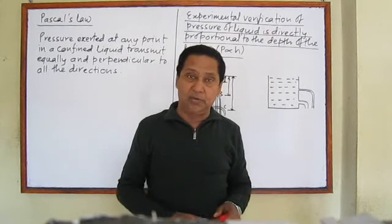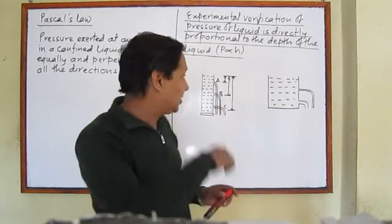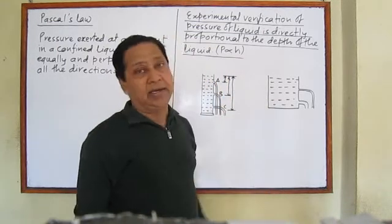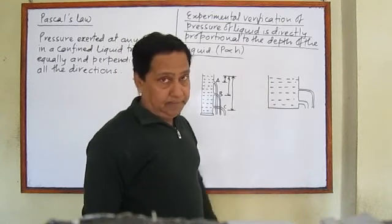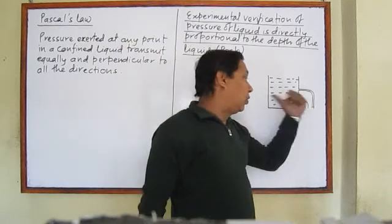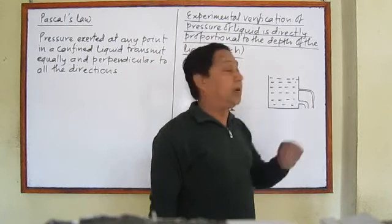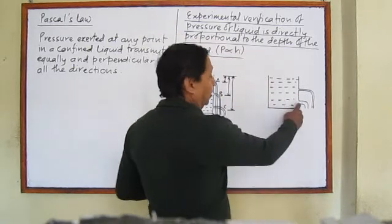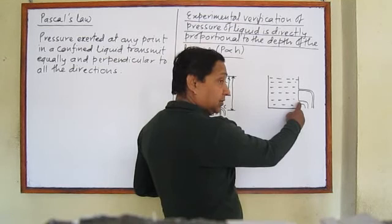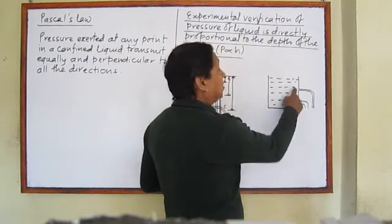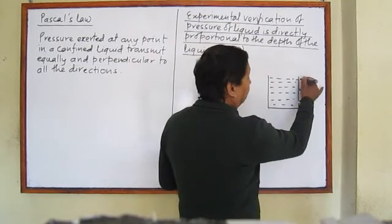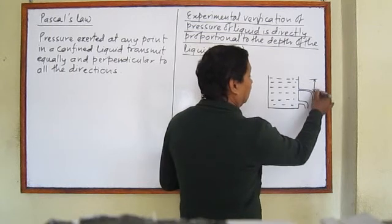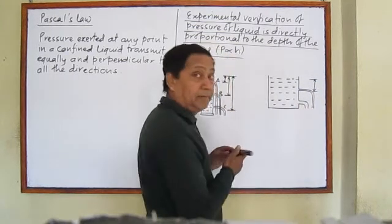But I want to tell you one interesting matter. Look at this diagram. Water is taken in a vessel and there are two holes, and water is coming out from each of the holes. Is it possible this hole lies at greater depth but pressure of water is less, but this hole lies at less depth but pressure is high? Is it possible?